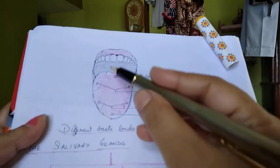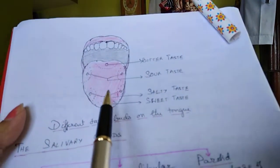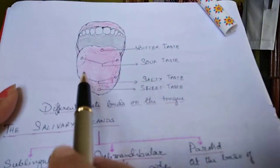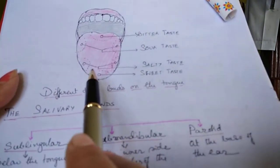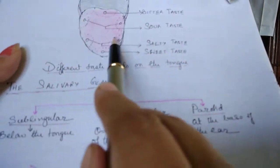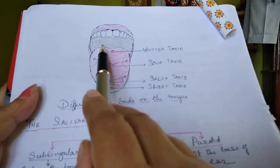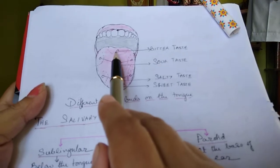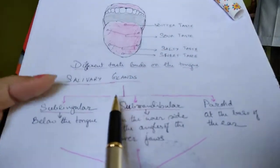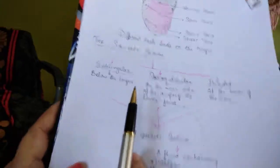This is the picture of the tongue showing the different taste buds present on it. The front portion has the sweet taste buds, the two sides have salty and sour taste buds respectively, and the back of the tongue has the bitter taste buds.